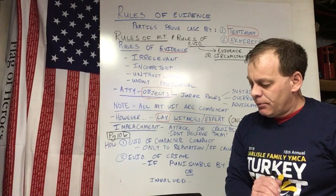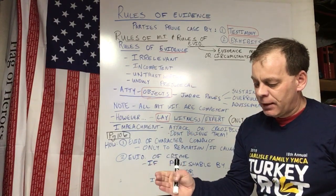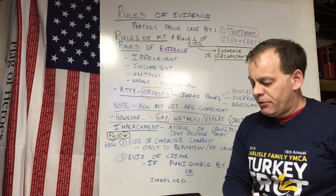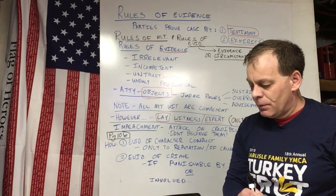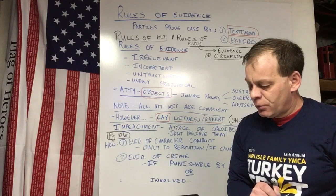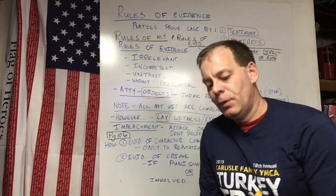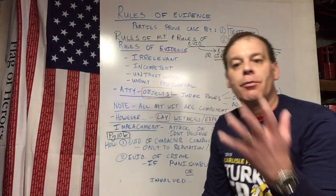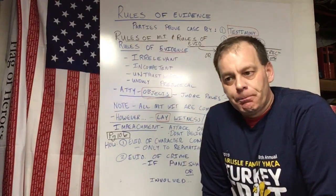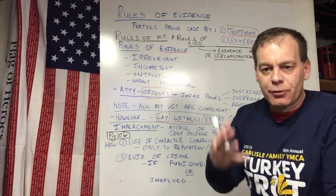If an attempt has been made to impeach any witness by proof of contradictory statements, you must determine: first, whether any such statements were made; second, whether they are contradictory to what the witness said on the stand; and third, whether it was material to the witness's testimony and to the case. The key is: if you find that a witness has been successfully impeached by proof of previous contradictory statements, you may disregard that testimony — unless it is corroborated by other witnesses.